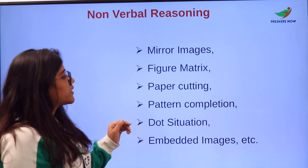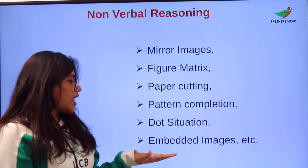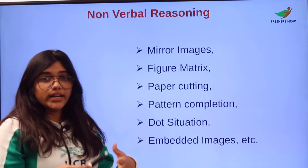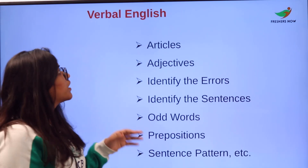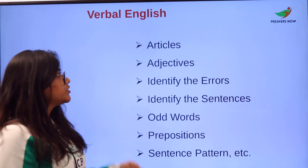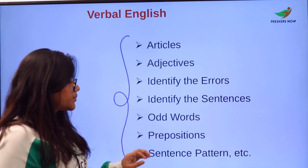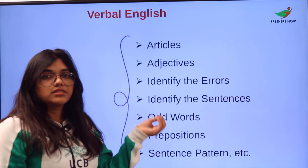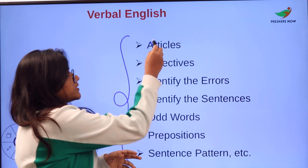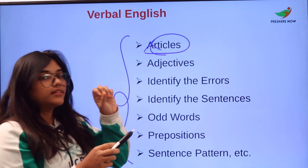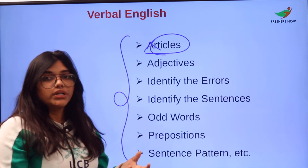For Non-Verbal Reasoning, you will be covering mirror images, paper cutting, pattern completions, dot situations, figure matrix, and embedded images. For Verbal English, you need to prepare topics like articles, adjectives, identifying errors, identifying sentences, odd words, prepositions, and sentence patterns. Note that questions may be jumbled — they won't give clear headings like 'find the article' or 'underline the adjective'; they may be mixed and asked alternatively.